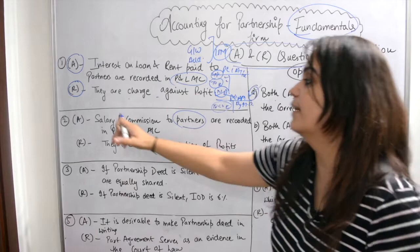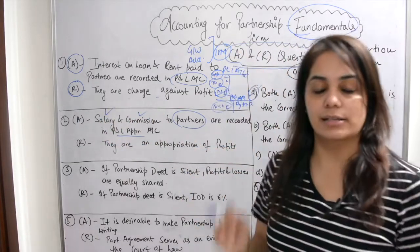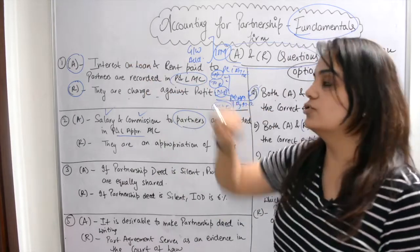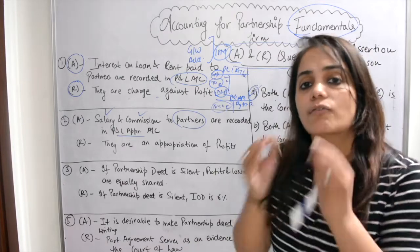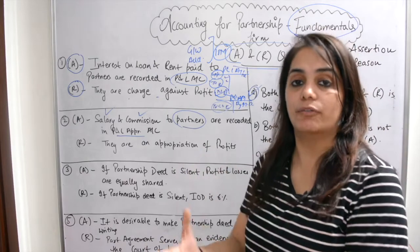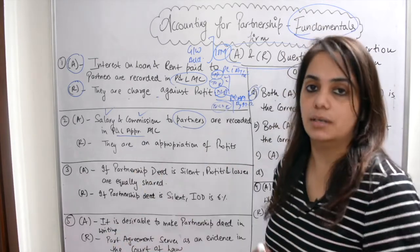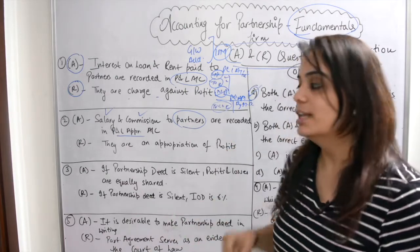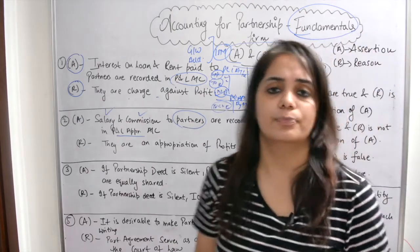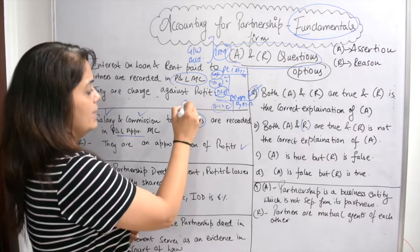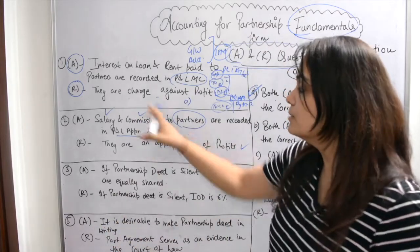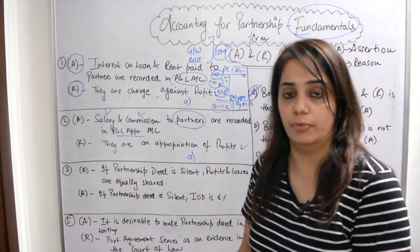As per accounting for partnership firms, we distribute net profit through salary and commission to partners. The reason states: salary and commission to partners are an appropriation of profits — meaning that profit is appropriated or distributed. So the assertion is correct and the reason is correct. The answer is Option A: both A and R are true, and R is the correct explanation of A.